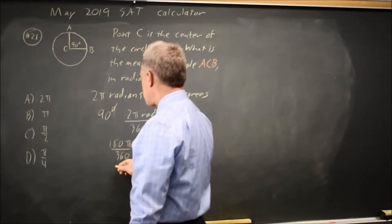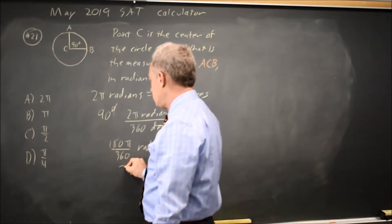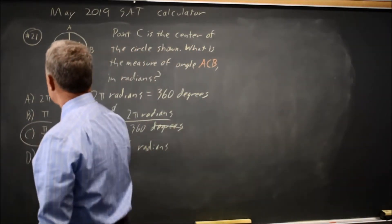And your calculator will help you if you need it. 180 over 360 is 1 over 2. So that is pi over 2, which is choice C.